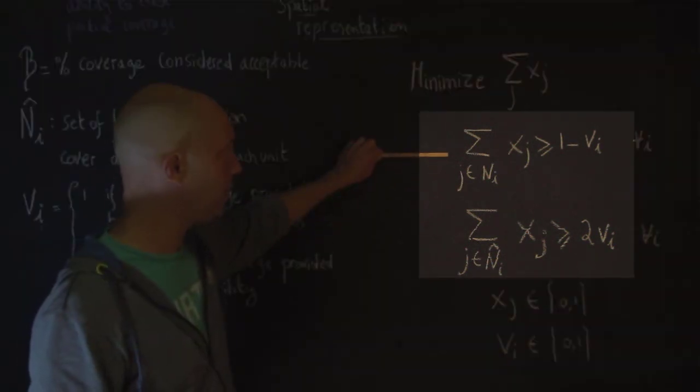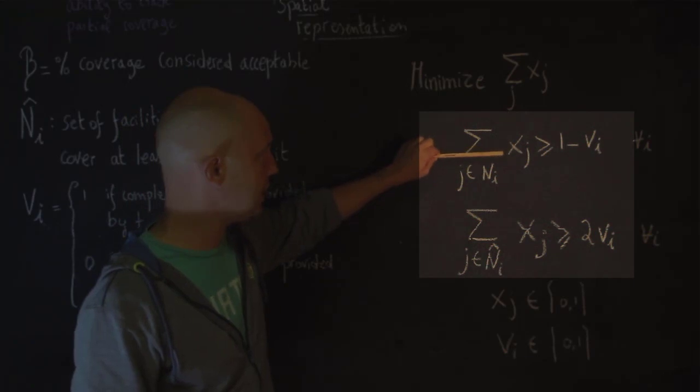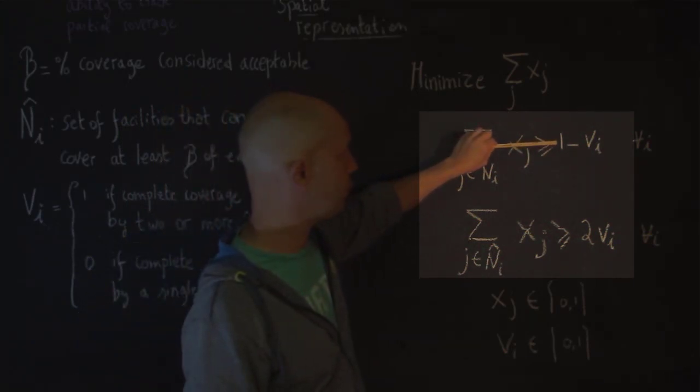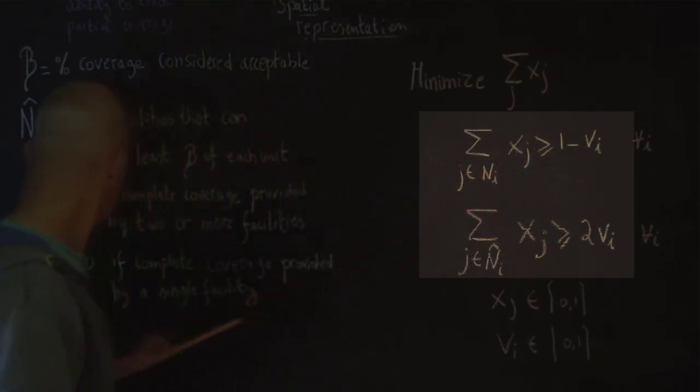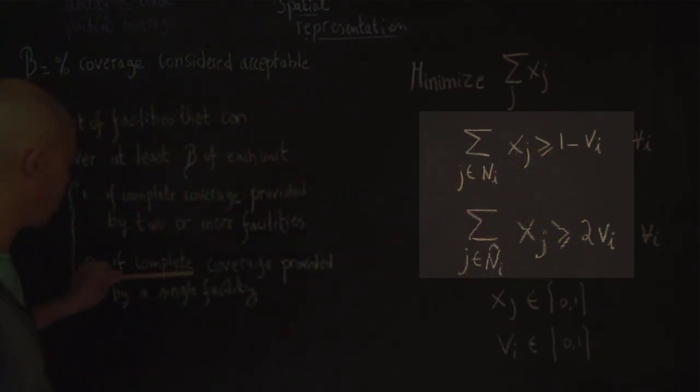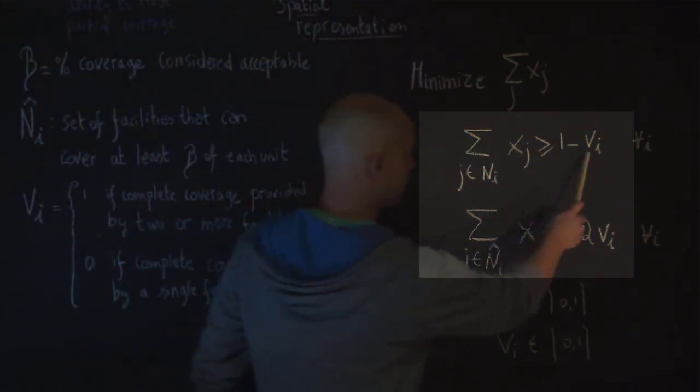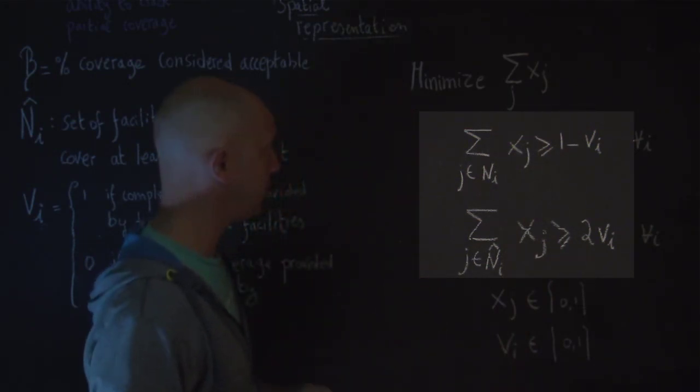Let's look at the first one. So, here we have the traditional number of facilities that can cover a demand node, which would be greater or equal to 1, minus vi. Now, what is vi if you remember here? So, vi is equal to zero if complete coverage provided by a single facility. So, if this is zero, then that should be simply that there must be at least one facility that can cover that demand node.